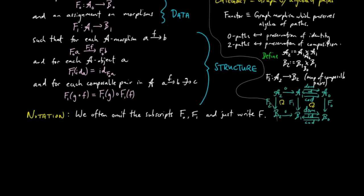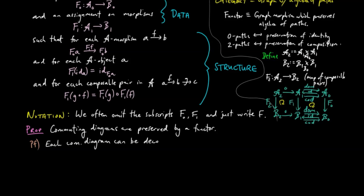It should be obvious that commuting diagrams are preserved by a functor, but we prove it nonetheless. So notice that each commuting diagram can be decomposed into commuting triangles. Then by definition of the functor, the commuting triangles are preserved by the functor,